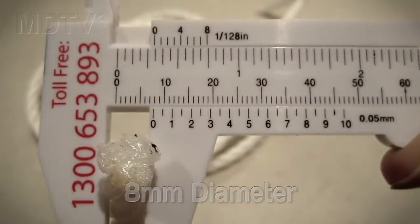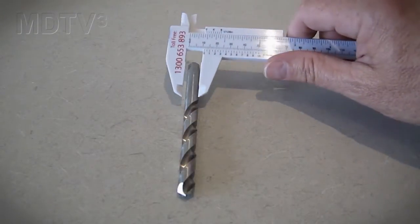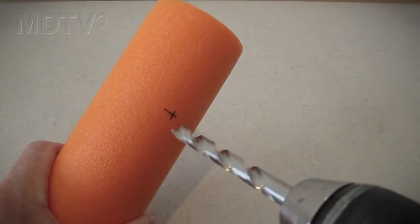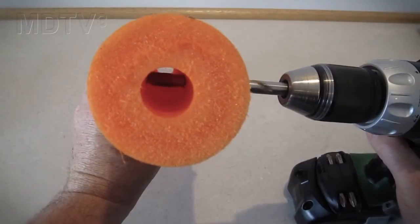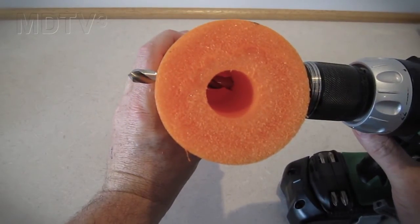I'm using 8 millimeter rope but you can use whatever size rope you have available. Use a drill slightly bigger than the diameter of your rope. I'm using an 8.5 drill. Drill a hole through both ends of all sections. Drill the holes through the pool noodle as straight as possible so that when they break through on the other side they'll be in the same line.